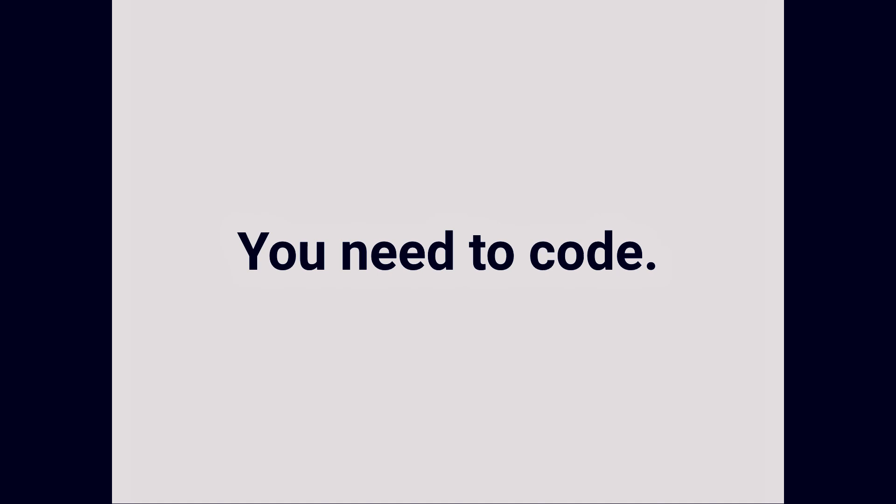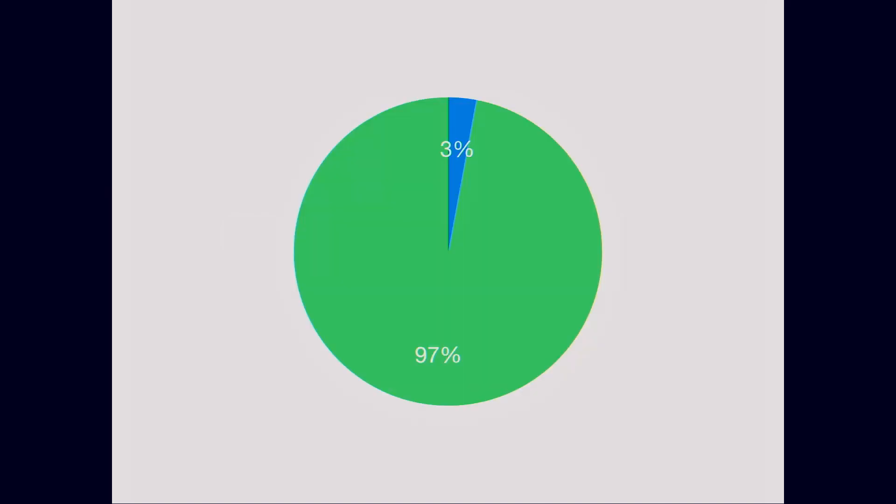Number one, the most difficult thing in blockchain is you need to code. You have to know how to code to do any of the things that we're building or talking about. This is a pie chart, and I don't even need to label it — you know which slice represents people who know how to code.